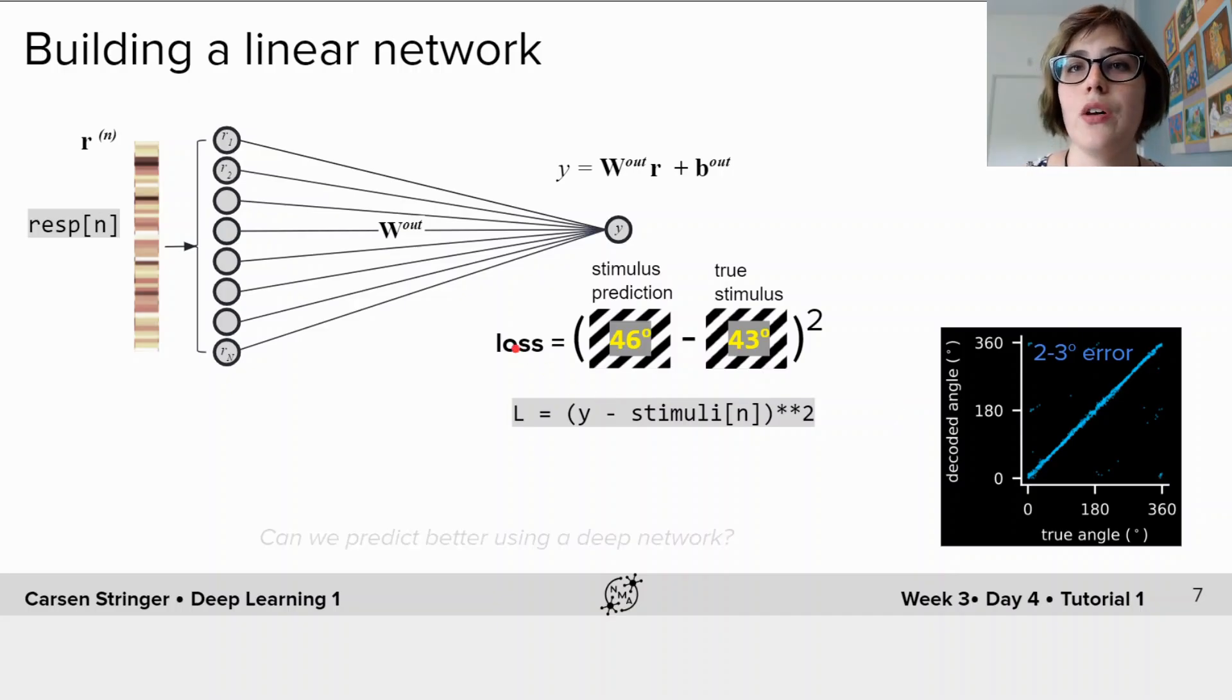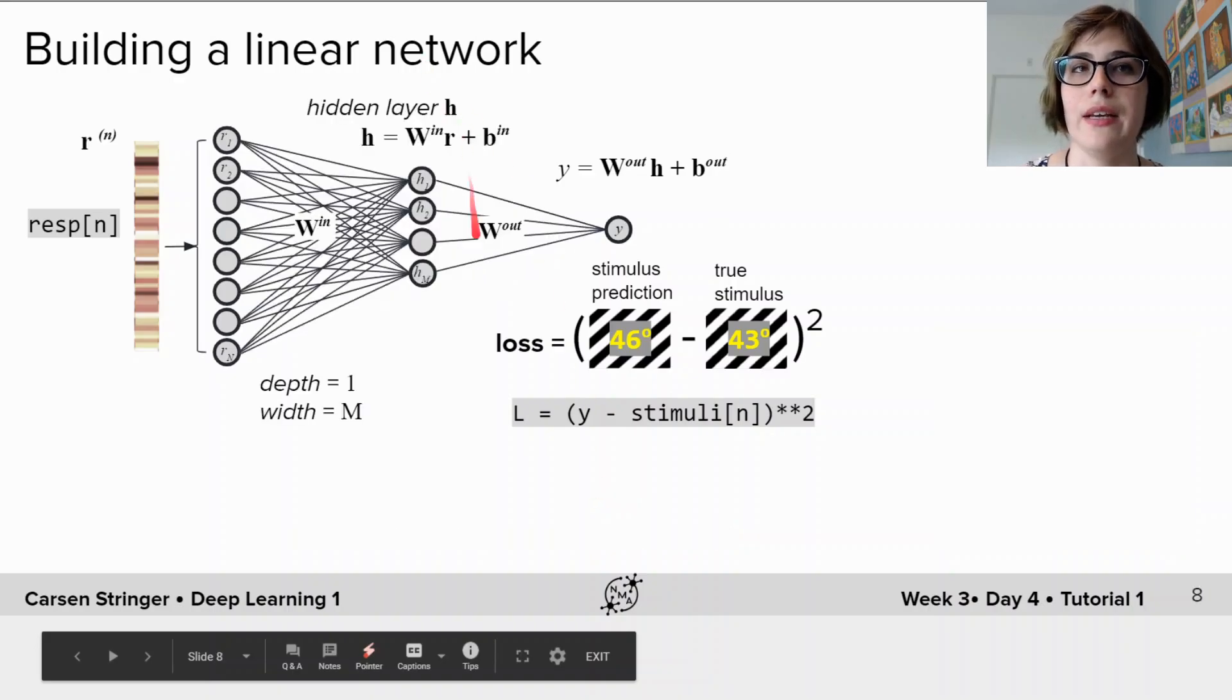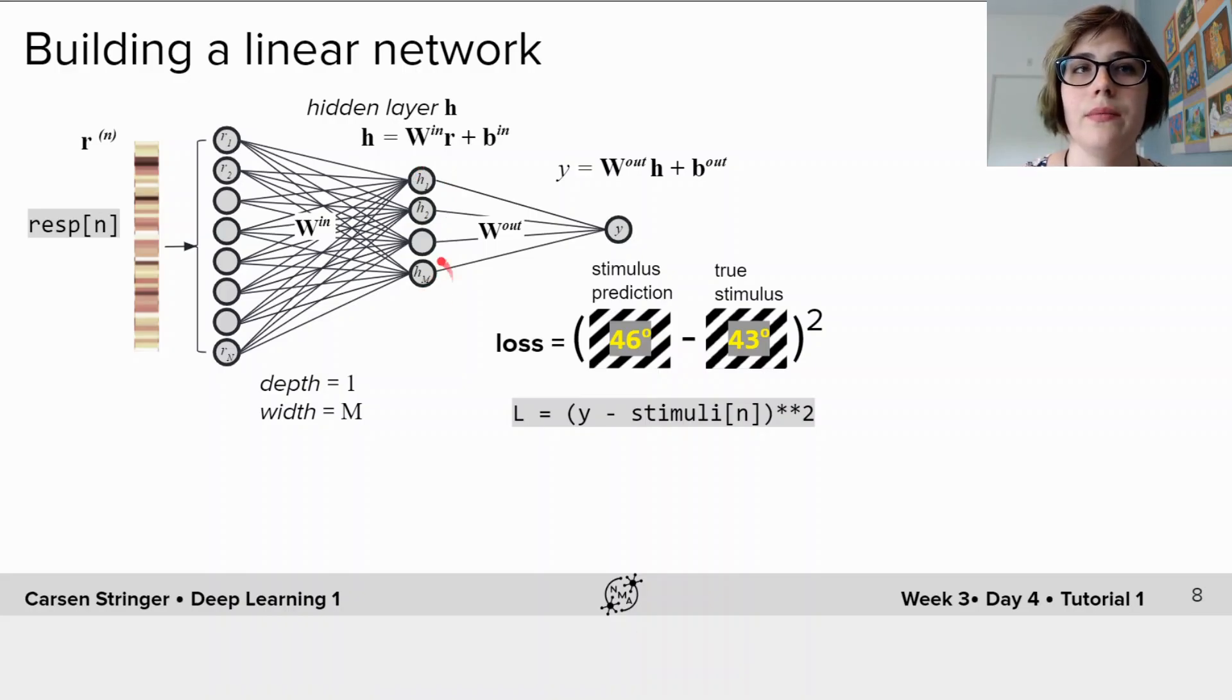Let's start by adding a single hidden layer with m units to this linear model where now the output y depends on the activity of these hidden units h and the hidden layer h, its activations depend on the neural responses r. This linear network with one hidden layer where m is less than n, which where n is the number of neurons, is equivalent to performing reduced rank regression, which is a technique that is actually useful for regularizing your regression model.